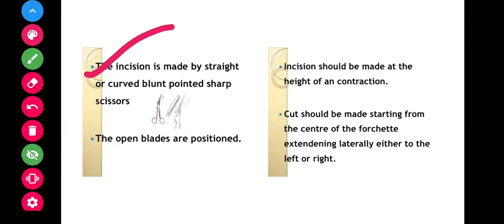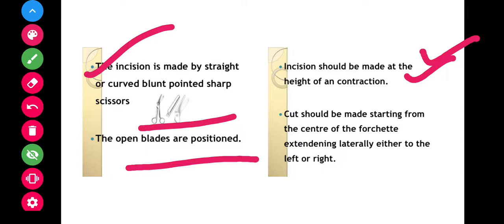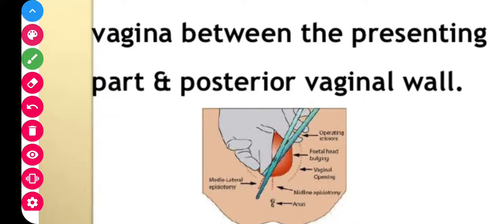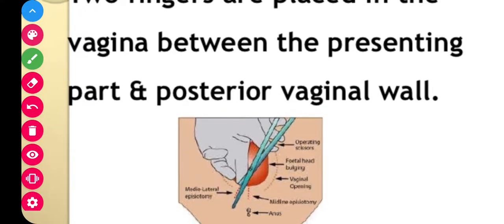After that, the incision is made by straight or curved blunt-pointed sharp scissors. The open blades are positioned. Incision should be made at the height of a contraction. The cut should be made starting from the center of the fourchette and extending laterally either to the left or right, from center to the left or right.